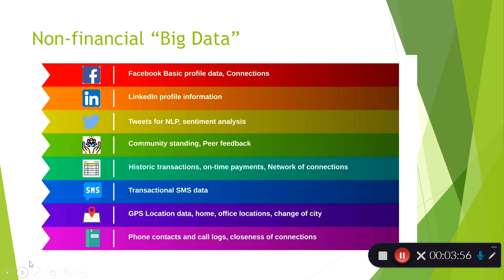One thing you hear about when discussing disruption is that so many of these apps have come about because of access to increased data and computing power. Think about insurance companies — with access to GPS, they knew where you were driving, how much you were driving, and how fast you were going, which made it easier to set appropriate insurance rates. The same kind of thing applies in fintech.